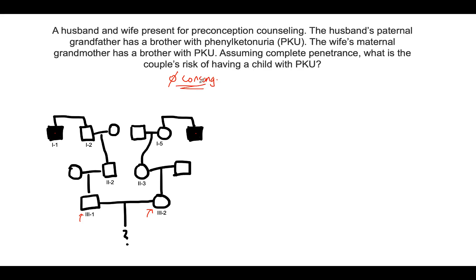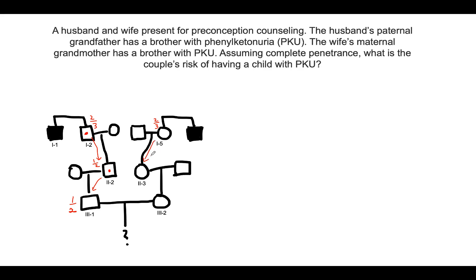We start by calculating the risk that individuals 1-2 and 1-5 are carriers, and we know that risk is two-thirds — the same logic as in the previous question. Given that 1-2 is a carrier, their chance of passing the disease allele to their offspring (2-1) is one-half. Similarly, given that 1-5 is a carrier, the chance of passing it on to 2-3 is one-half. On the other side, the chance of 1-5 passing the disease variant to 2-3 is one-half, and then the chance of 2-3 passing it on to 3-2 is also one-half.